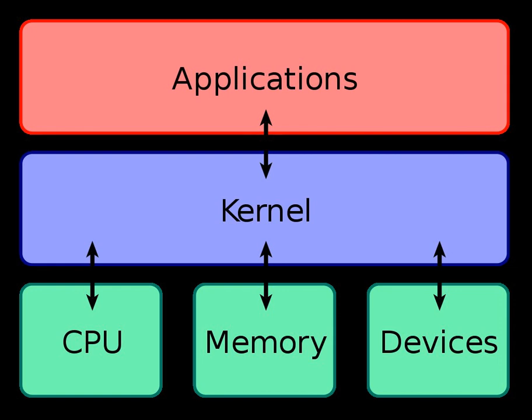As the computer kernel grows, so grows the size and vulnerability of its trusted computing base, and besides reducing security, there is the problem of enlarging the memory footprint. This is mitigated to some degree by perfecting the virtual memory system, but not all computer architectures have virtual memory support. To reduce the kernel's footprint, extensive editing has to be performed to carefully remove unneeded code, which can be very difficult with non-obvious interdependencies between parts of a kernel with millions of lines of code.